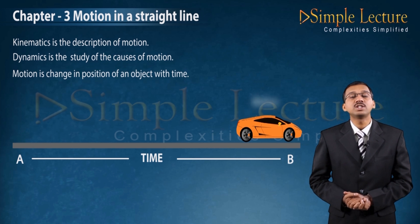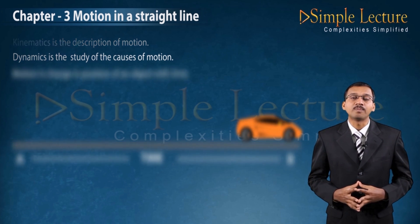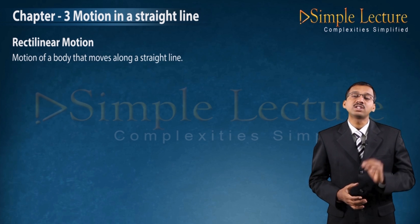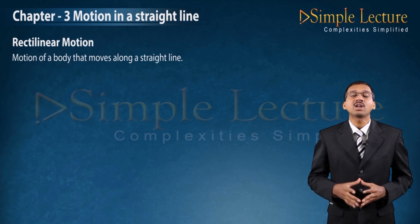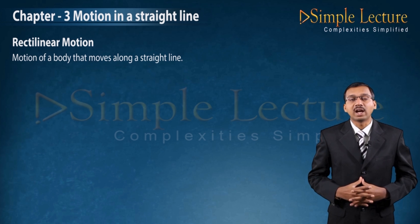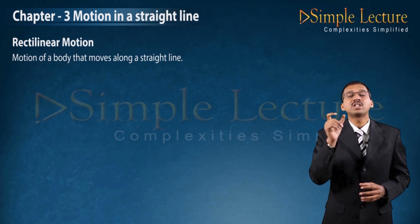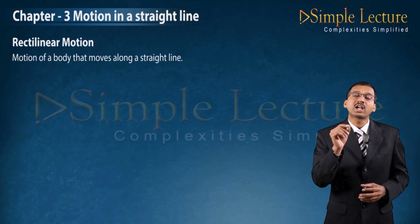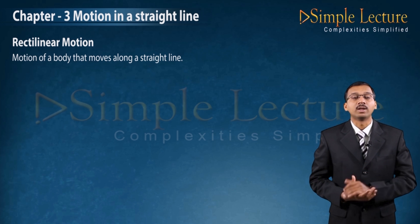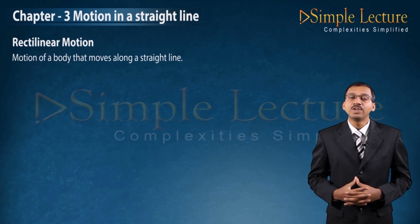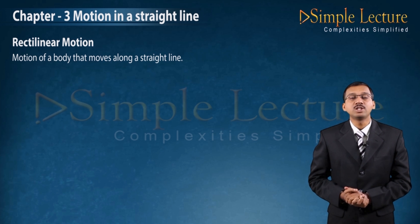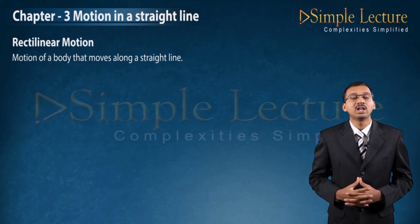Therefore, motion is a change in position of an object with time. In that, rectilinear motion means the change in position of an object which takes place along a straight line. Rectilinear means nothing but a straight line. Motion of a body which moves along a straight line — that is, with respect to one dimension — is called rectilinear motion.